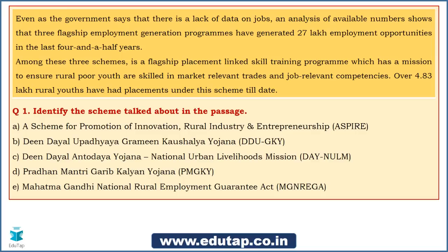To identify the scheme, make sure you understand the crux of the passage: first, it is one of the employment generation programs; second, it is a flagship placement-linked skill training program. The first question is: identify the scheme talked about in the passage. Dhruv says B — Deen Dayal Upadhyaya Grameen Kaushalaya Yojana. Swapnil also agrees it is B. Mayur says A — the ASPIRE program. And Badri says C — Deen Dayal Antyodaya Yojana National Urban Livelihoods Mission.